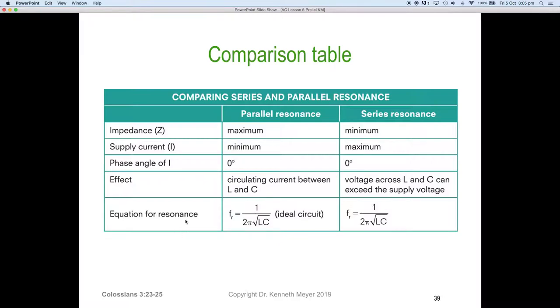So here's a little comparison table. We have our aspects or characteristics down the left hand side: impedance, current, phase angle, effect, and the equations that we use. The first column is parallel resonance and the next column is series resonance. If we look at impedance as a characteristic in a parallel circuit, resonance goes to its maximum. So that will mean that current will go very low, minimum. Phase angle is zero. The effect is we get circulating currents, and they can be quite high between the inductor and the capacitor. And the equation is frequency at resonance equals 1 over 2π√LC.